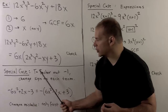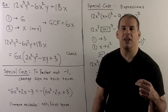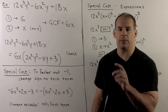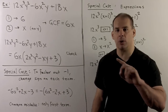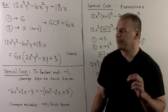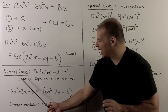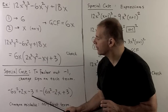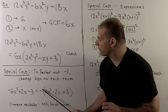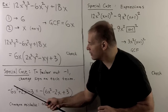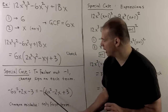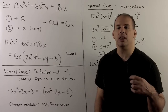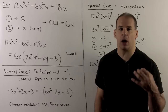We have two special cases. First, factoring out a minus sign — the effect is to multiply through by −1, which just changes the sign on each term. So if I had −6x² + 2x − 3, I put it in parentheses with a minus sign in front, giving −(6x² − 2x + 3). The common mistake is to change only the sign on the first term, so always check your work.